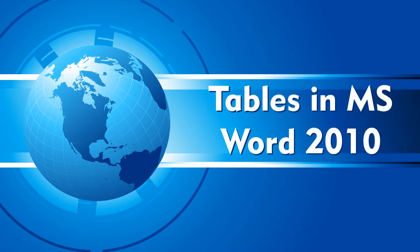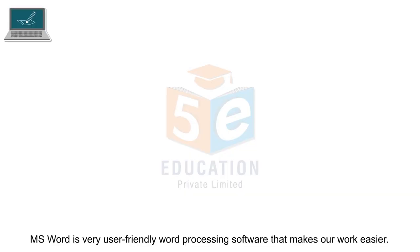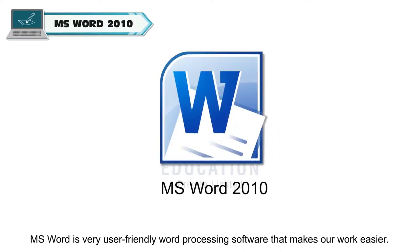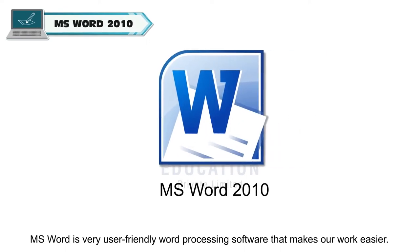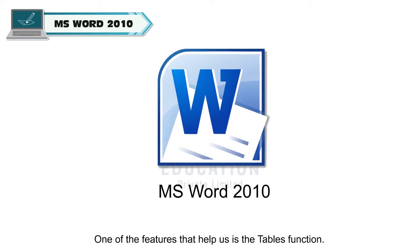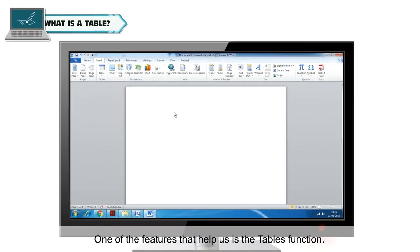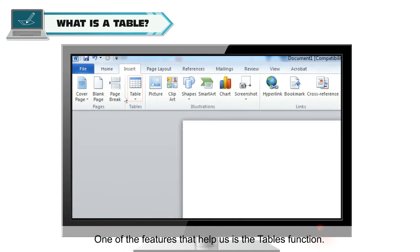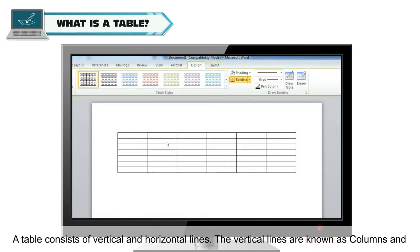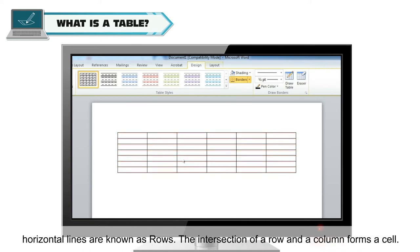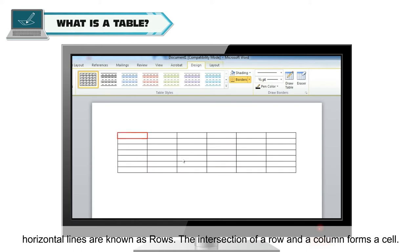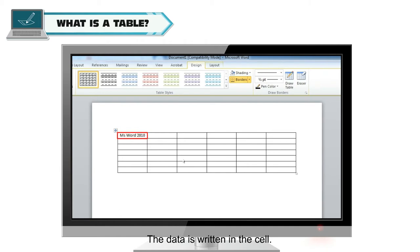Tables in MS Word 2010. MS Word is a very user-friendly word processing software that makes our work easier. One of the features that helps us is the tables function. A table consists of vertical and horizontal lines. The vertical lines are known as columns and horizontal lines are known as rows. The intersection of a row and a column forms a cell, and the data is written in the cell.